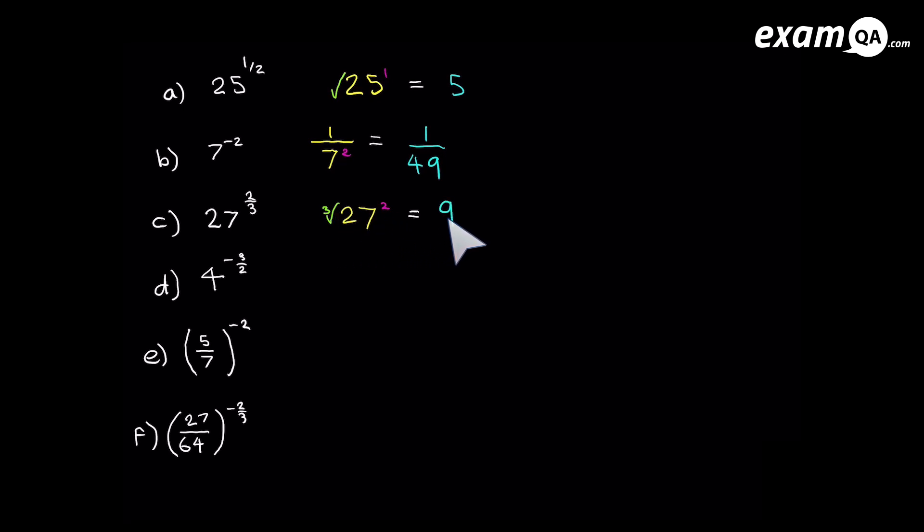Now in the next example we've got a number to the power of a fraction, but that fraction has also got a negative sign. And remember that negative in the power just simply makes it 1 over. That's all it does. Now we've got rid of that negative by simply just writing it as 1 over 4 to the power of 3 over 2. That negative simply just makes it 1 over. Now we just need to sort out that fractional power.